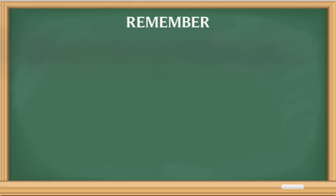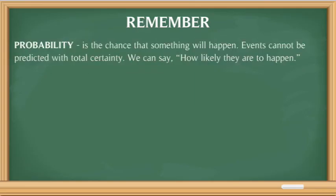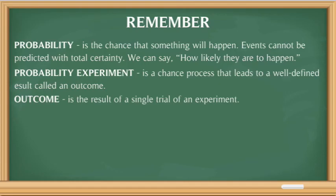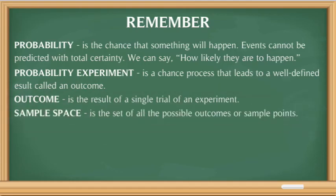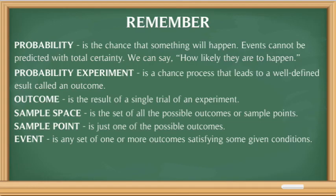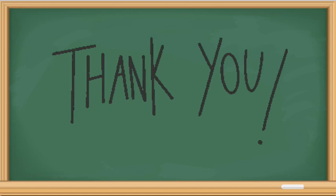Let's summarize what we have learned. Probability is the chance that something will happen — events cannot be predicted with total certainty, but we can say how likely they are to happen. A probability experiment is a chance process that leads to a well-defined result called an outcome. An outcome is the result of a single trial of an experiment. Sample space is the set of all possible outcomes or sample points. A sample point is just one of the possible outcomes. And lastly, an event is any set of one or more outcomes satisfying some given conditions. Hopefully this video was helpful and informative — thank you for watching. If you have any questions or suggestions, feel free to comment down below. Enjoy learning mathematics and goodbye!